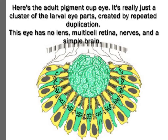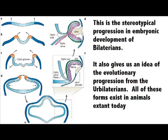Here's the adult pigment eye. It's really just a cluster of the larval eye parts created by repeated duplication. This eye has no lens, a multicellular retina, nerves, and a simple brain. This is the stereotypical progression in embryonic development in bilaterians.